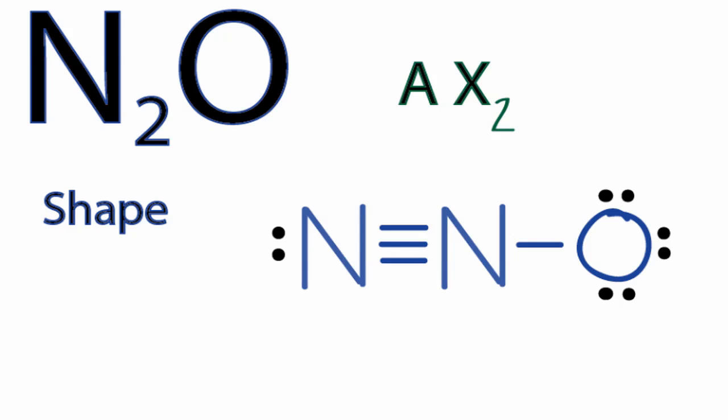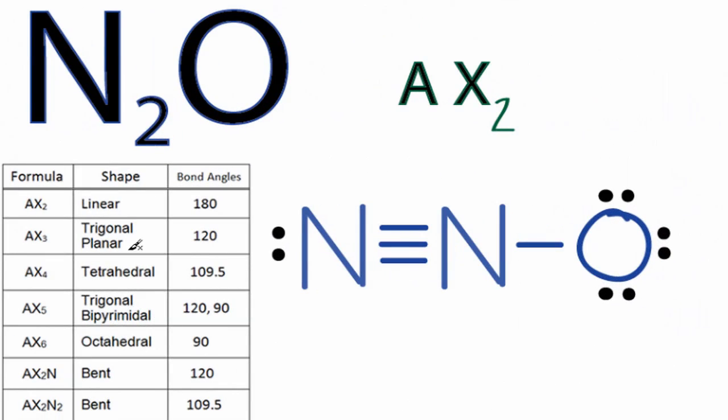Now, if you memorize that AX2 is a linear molecule, you're really done there. But you may be able to use a table to look it up. So in our table here, AX2 is actually the first thing on the list. That means it's linear and has bond angles of 180.